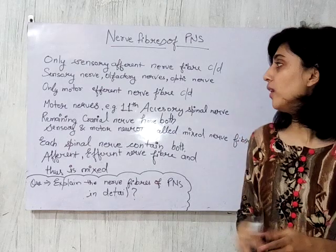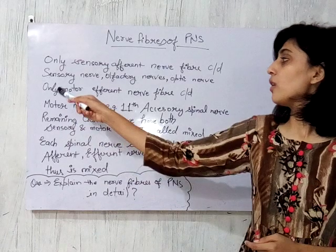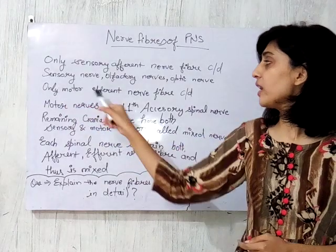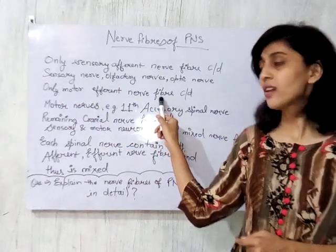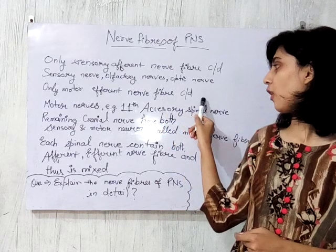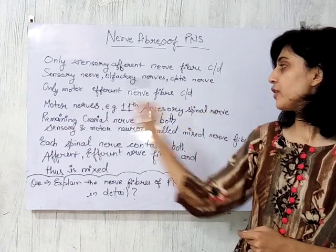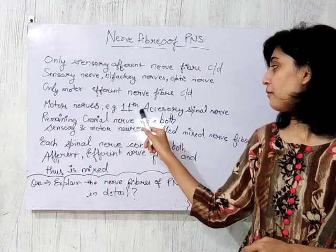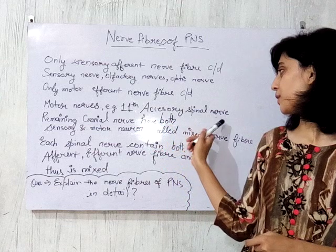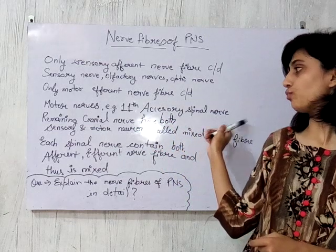When only motor efferent nerve fiber is present, then we will be calling it a motor nerve. An example is the 11th cranial nerve.